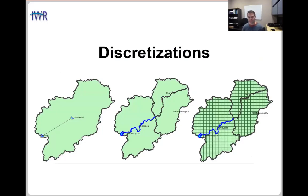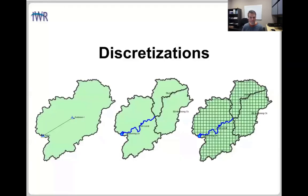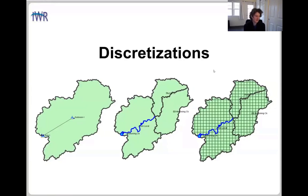All right, let's talk about discretizations. We have three different ways shown here that we've discretized the basin. On the left, we have one parameter set for the entire modeling domain. In the middle, we're using three subbasins, so each subbasin can have its own parameterization. On the right, we have a gridded discretization, so each grid cell can have its own parameterization. With the discretization, we can also apply gridded boundary conditions.